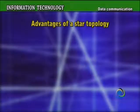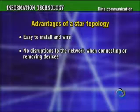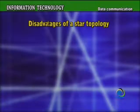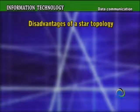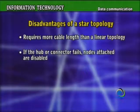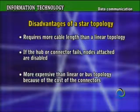Advantages of a star topology: easy to install and wire, no disruption to the network when connecting or removing devices, and easy to detect faults and to remove parts. Disadvantages: requires more cable length than a linear topology, if the hub or connector fails all attached nodes are disabled, and more expensive than linear bus topologies because of the cost of the connectors.